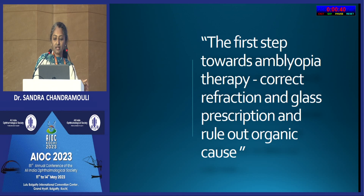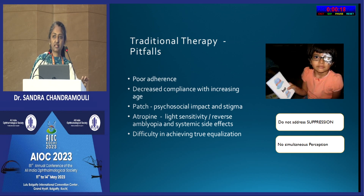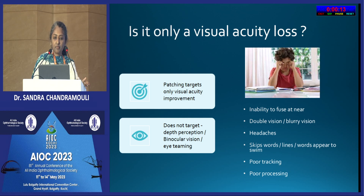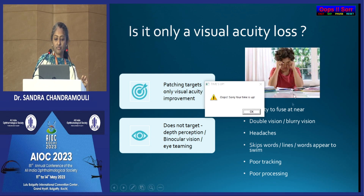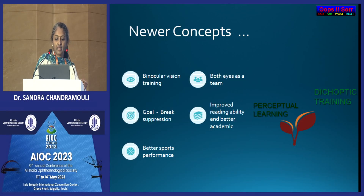For amblyopia, the first step is to correct refraction with the latest prescription and rule out organic causes. Traditional patching therapy has been the gold standard, but pitfalls include poor adherence, decreased compliance with increasing age, psychosocial impact of patching, and light sensitivity with atropine. It does not truly equalize vision because it does not address suppression or increase simultaneous perception. Amblyopia involves more than just visual acuity loss - difficulties include inability to fuse at near, double vision, blurry vision, headache, poor tracking, and poor processing. Newer concepts include binocular vision training, encouraging both eyes to work as a team to break suppression, improve reading ability, academic performance, and sports performance.